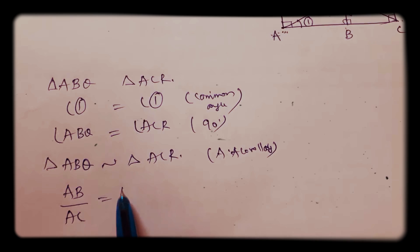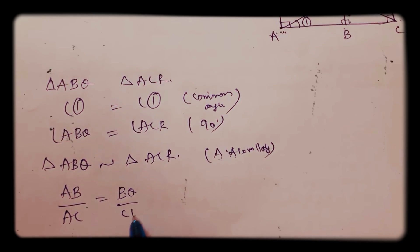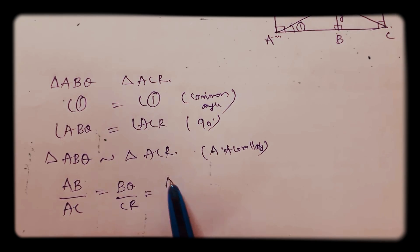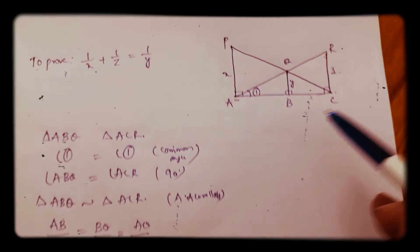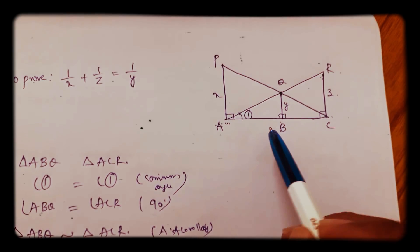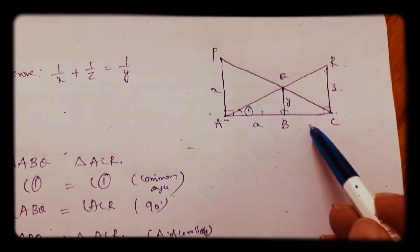Now in the second, sides are proportional: AB/AC = BQ/CR = AQ/AR. Here in the diagram, AB you consider as A, and BC considered as B, then total will be A plus B.